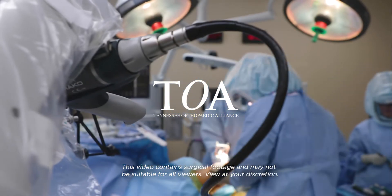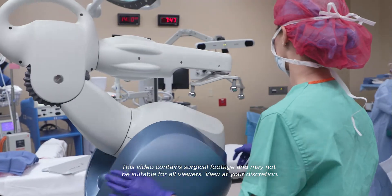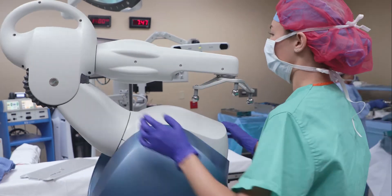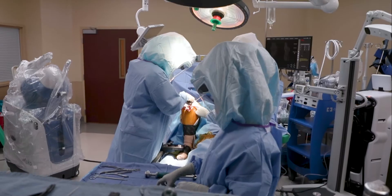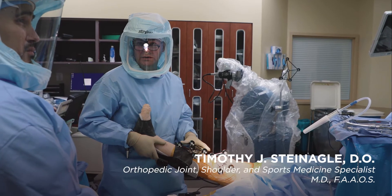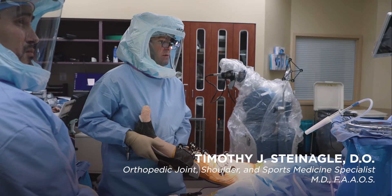Mako is a robotic-assisted device that helps with knee and hip replacement. Everybody's joint is a little different, and as people get arthritic they often have deformities in their joints. You can make corrective cuts and preparations that allow you to restore a joint to its normal position.